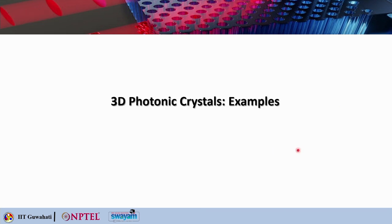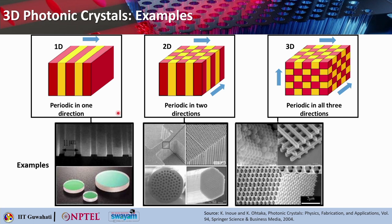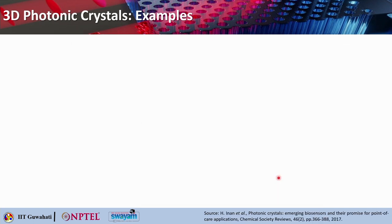Let us take some examples of 3D Photonic Crystals. For a quick recap: 1D Photonic Crystals include Bragg grating and dielectric mirrors. For 2D Photonic Crystals, photonic crystal fibers and planar photonic crystals come to mind. Whenever you think of three-dimensional photonic crystals, opal structures, wood pile structures, or inverse opal structures should come to mind — these are all three-dimensional modulations of refractive index.